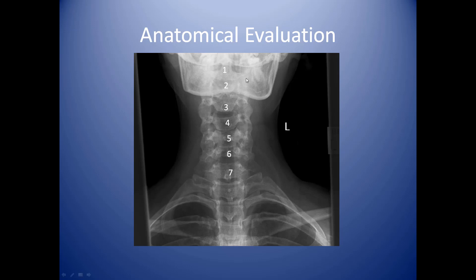We're doing AP and lateral views only for this module. Enumerating: C1, C2, C3, C4, C5, C6 — which has a slightly unusual shape — and C7, after which the thoracic spine begins. A good examination includes all seven vertebrae plus visible intervertebral spaces. You can also see these small holes off to the side — these are articular foramina, the surfaces that allow blood vessels and nerves to travel in and out to the spinal cord.